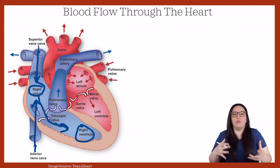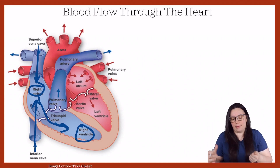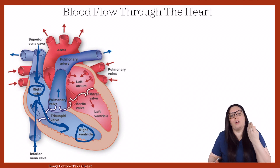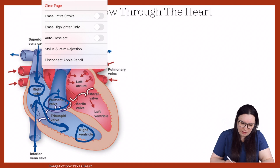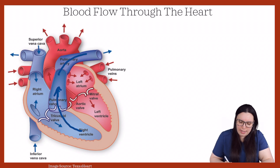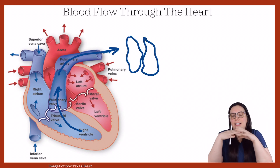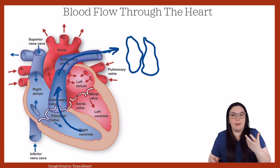Blood comes from the right atrium, goes through the tricuspid valve, and dumps into the right ventricle. Then during systole, one of two things occur: our left ventricle is going to pump blood out to the systemic circulation, and our right ventricle is going to pump blood into our pulmonary circulation. That deoxygenated blood gets pumped through the pulmonary valve, into our pulmonary artery, and into our lungs.